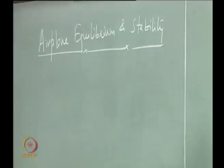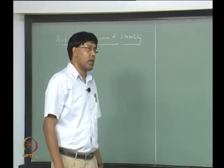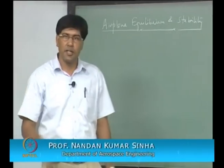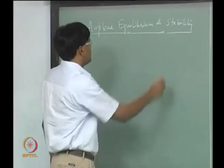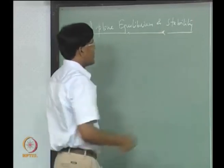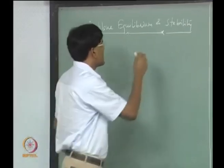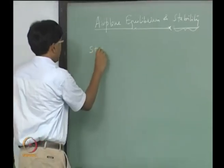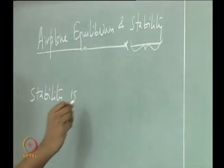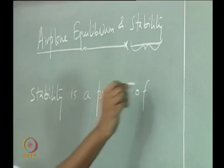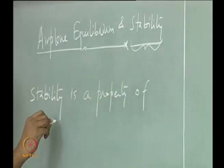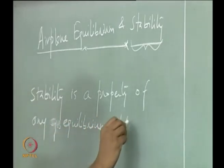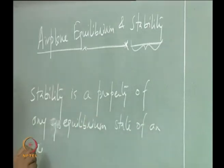One of the things that an aircraft designer always has to keep in mind is how an aircraft is going to behave in motion with respect to external disturbances, and the disturbances can be small or large. When we talk about disturbances and the aircraft's response with respect to those disturbances, we are talking about aircraft stability. Stability is a property of any equilibrium state of a system.